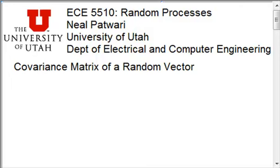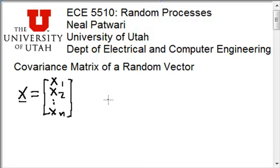We talked about random vectors being a list of several elements, several random variables. So I might have x1 and x2 all the way up to xn, and I put them in a column vector and call that x with a line underneath it to indicate that it's a vector.